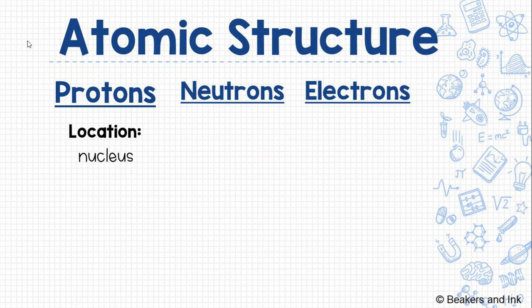So there's three parts of an atom. We call them subatomic particles. Sub, smaller than an atom. There are protons, neutrons, and electrons.